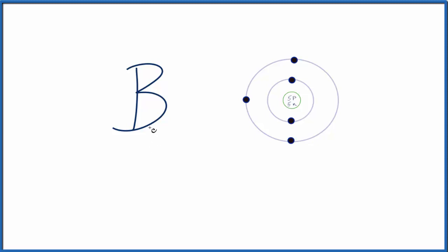So on the periodic table, boron B, it's neutral. It doesn't have a plus or minus charge. That means the number of electrons is equal to the number of protons and we don't write a plus or minus.